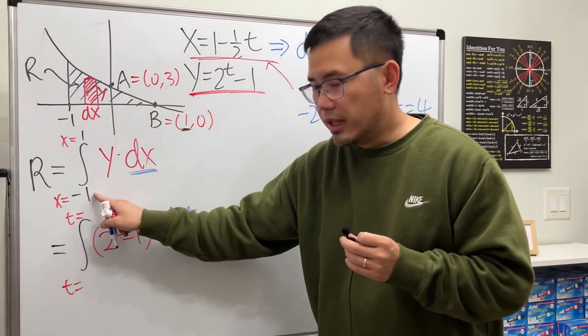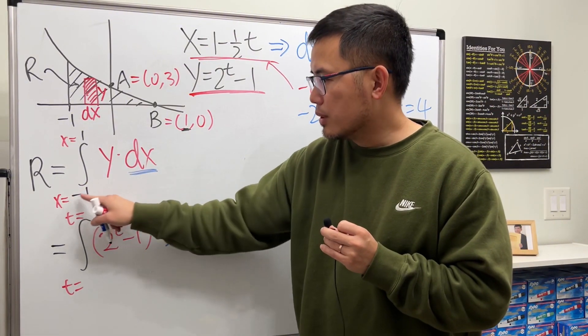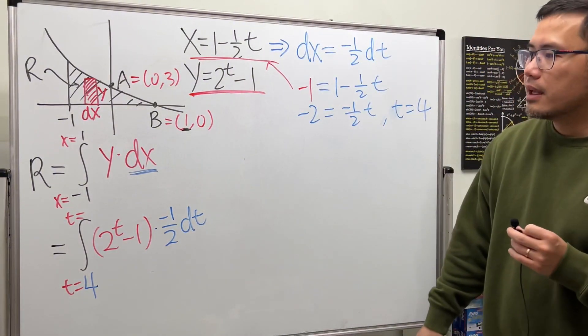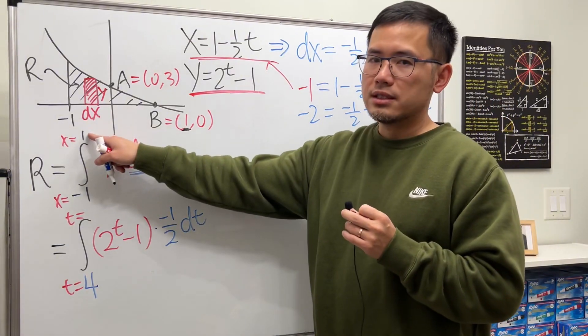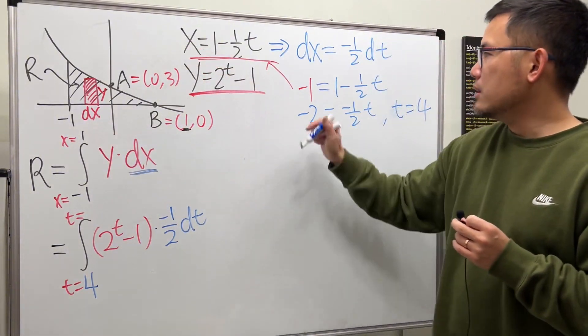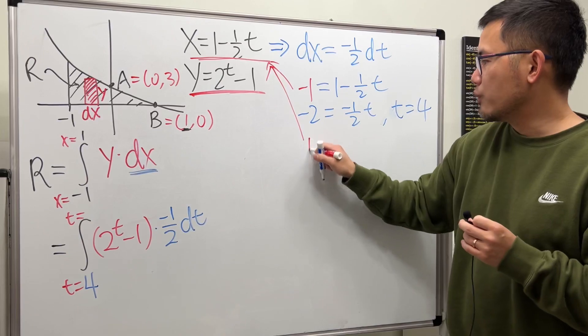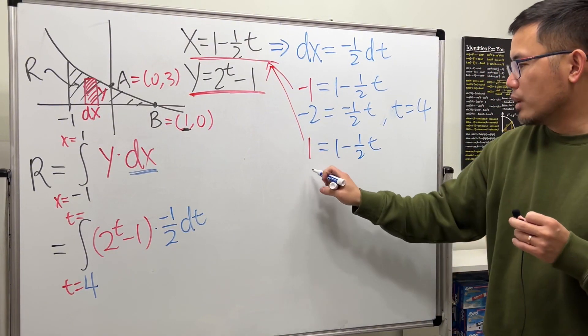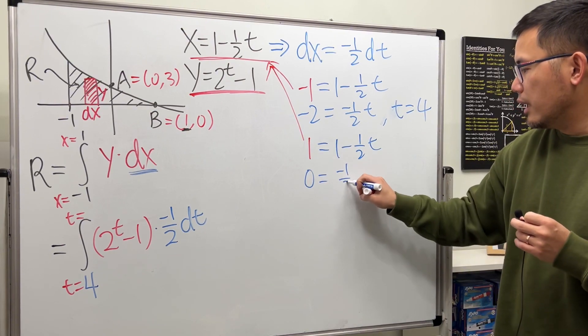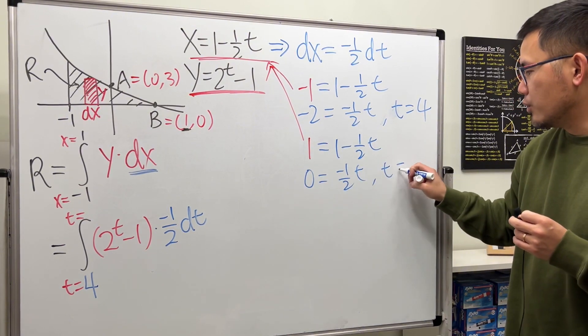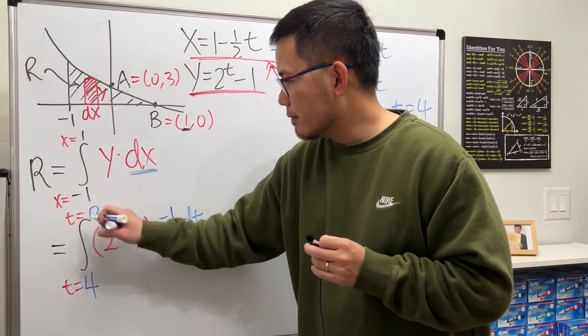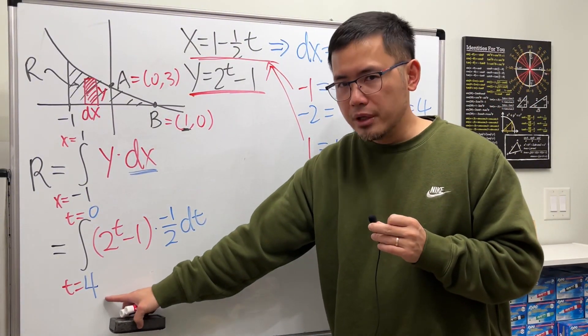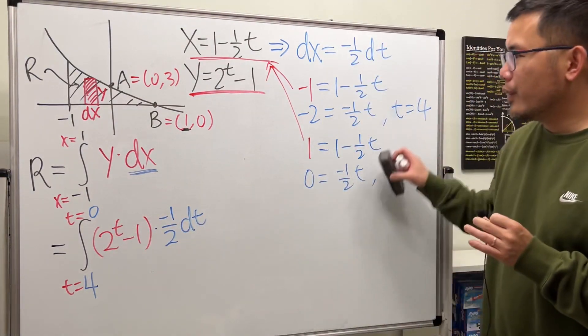So when x was negative 1, the corresponding t value is t equals 4. And now let's do the same thing when x equals 1. Put it right here. We have 1 = 1 - 1/2t. Minus 1, so we get 0, and then this 1/t will be just equal to 0. Now you might be wondering, how can we have an integral going from a bigger number to a smaller number? Well, don't worry.